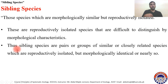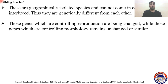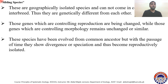You cannot distinguish sibling species by using morphology because morphologically they are similar. Sibling species are pairs or groups of similarly or closely related species which are reproductively isolated but morphologically identical or nearly identical. These are normally geographically isolated species and cannot come into contact to interbreed. They are genetically different from each other — morphologically they are similar, but genetically different. The genes controlling reproduction have changed due to long isolation, while the genes controlling morphology remain unchanged.